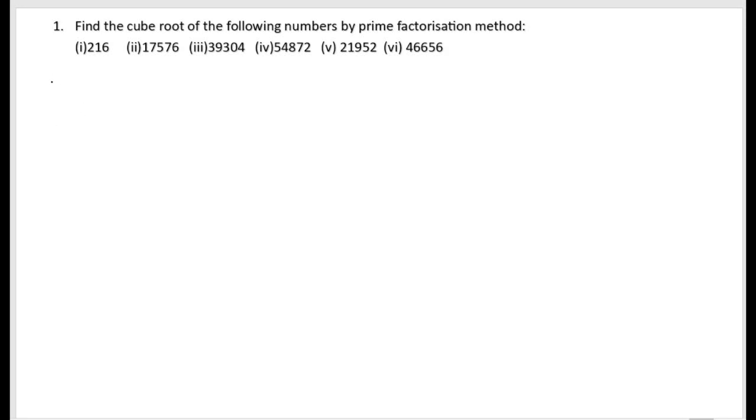Next is the third bit. So let us start the third bit. The given number is 39304. First we will find out the factors. So 39304. Since the last digit is 4, we can start with the 2 table.